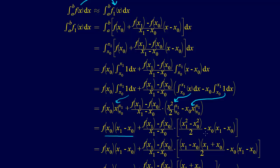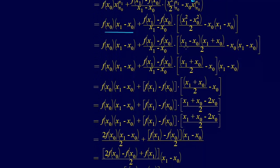Now we just simplify. We recognize that x1 squared minus x0 squared is a difference of squares: (x1 minus x0)(x1 plus x0). We can then factor x1 minus x0 out of all three terms. After factoring, that x1 minus x0 cancels with the denominator.